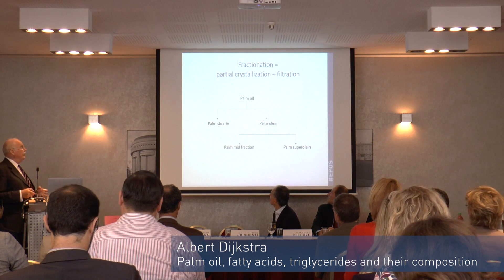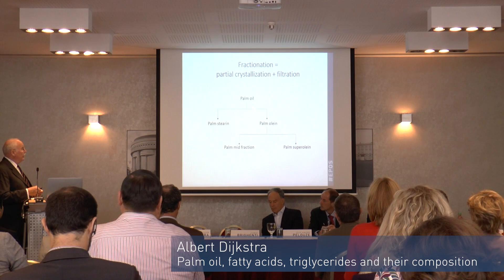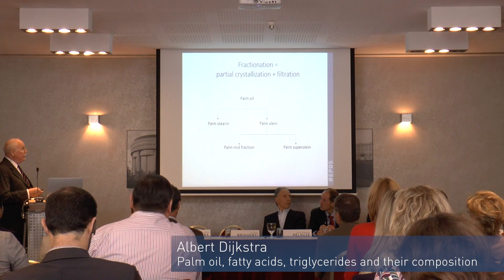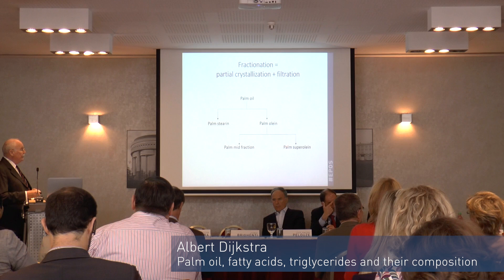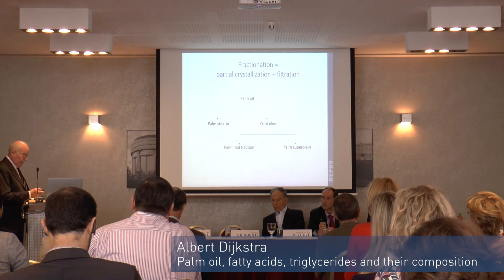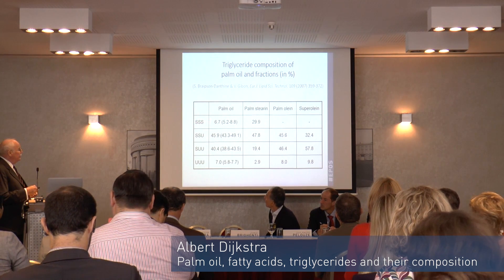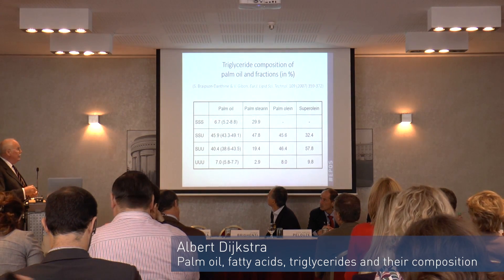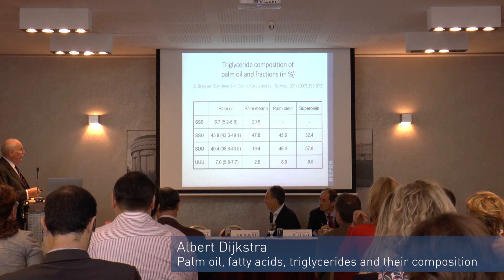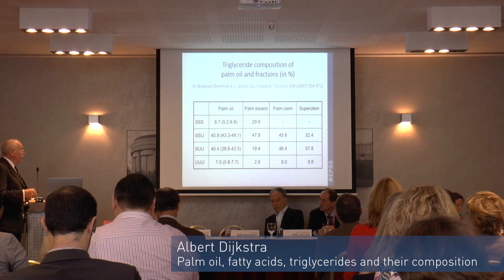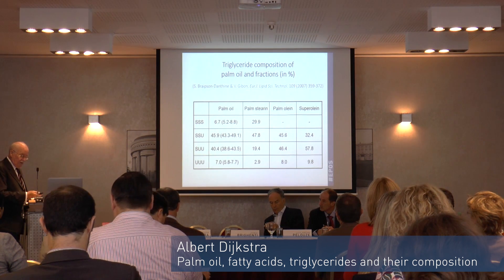You do this by fractional crystallization — you partially crystallize the melt and then filter the resulting slurry. Starting with palm oil, you get a filter cake called the stearine and a filtrate called the oleine. You can then cool down further to get another filter cake called the mid-fraction, and a palm super oleine. They differ in triglyceride composition. The SSS — tri-saturated, high-melting triglyceride — is 7% in palm oil but concentrated in the stearine, while the oleines have no high-melting stearines. The low-melting triglycerides, on the other hand, are concentrated in the lower-melting fractions.